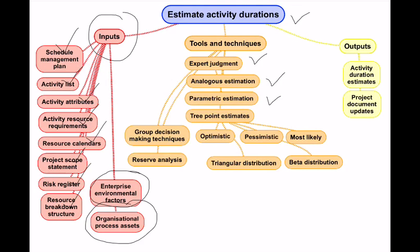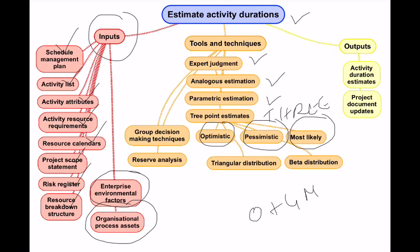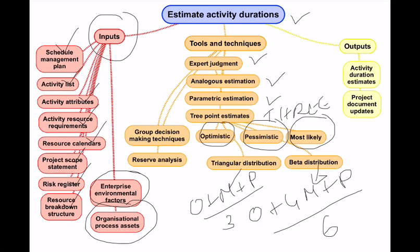Three-point estimation means for every task we come up with an optimistic estimate, a pessimistic estimate, and a most likely estimate. We then apply a formula: for beta distribution it is (Optimistic + 4 × Most Likely + Pessimistic) / 6. For triangular distribution it is (Optimistic + Most Likely + Pessimistic) / 3.